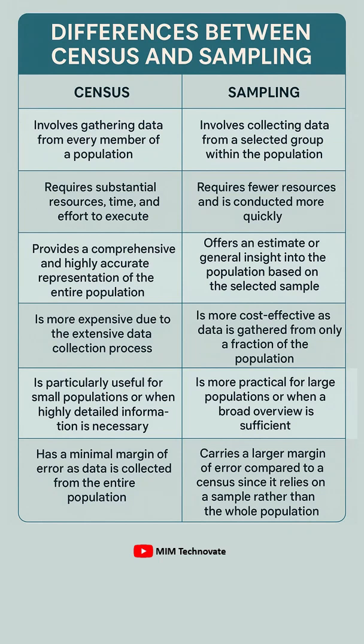Differences between census and sampling. Census involves gathering data from every member of a population. On the other hand, sampling involves collecting data from a selected group within the population.